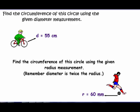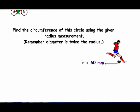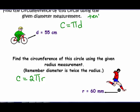Find the circumference of the circle using the given diameter measurement — I'll leave this one for you to do, and we'll go over it in class. Use the formula C = πd. Also find the circumference of the circle using the given radius measurement using C = 2πr. Have your calculator in classic mode. For the first problem, round to the tenths place; for the second — the soccer ball with a radius of 60 millimeters — round to the hundredths place. Pause the video and do those on your own.